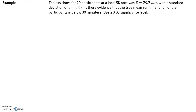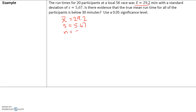Here's an example. The run times for 20 participants at the local 5k race was 29.2 minutes. So for the sample of 20 participants, our sample mean was 29.2 minutes with a standard deviation of 5.67. Our sample mean x-bar is 29.2, our sample standard deviation is 5.67, and the sample size is 20.